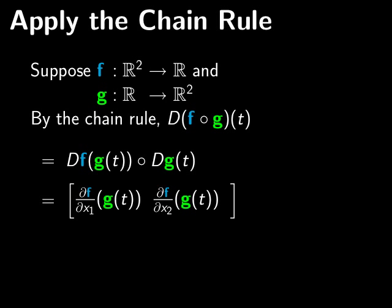What I've written down here is the derivative of f evaluated at g of t as a matrix written down with partial derivatives. And here's the derivative of g at t, which I've written down as a matrix. And composition of linear functions is matrix multiplication. So instead of writing the circle for composition, I just wrote a dot for matrix multiplication. And we will multiply out these two matrices.